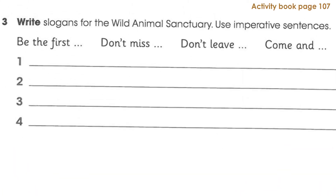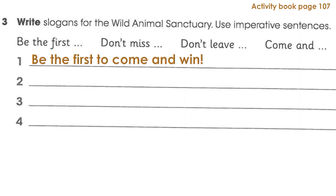Now it's your time to practice. Write slogans for the Wild Animal Sanctuary using imperative sentences — 'Be the first,' 'Don't miss,' 'Come on,' and so on. Let me help you with one: 'Be the first to come and win' — for example, if the first visitor gets a prize. You are going to complete the rest.